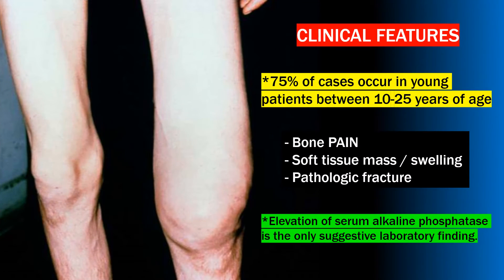Most osteosarcomas occur in young patients between 10 and 25 years of age. Common clinical symptoms include bone pain, soft tissue mass or swelling, and even pathological fracture through the weakened bone. One of the few laboratory findings suggestive of an osteosarcoma is an increase in serum alkaline phosphatase.